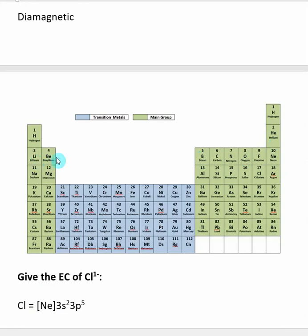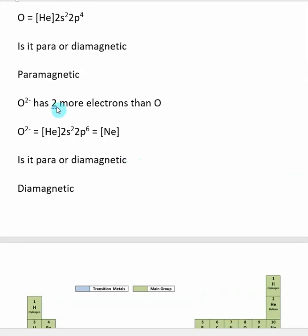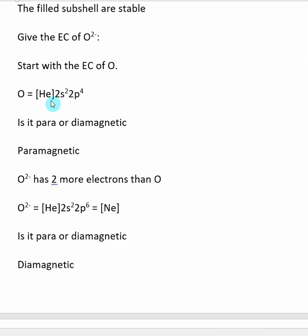We move forward. So here we have filled the 2S subshell, and we've moved on to the 2P subshell, and there are 1, 2, 3, 4 electrons in the 2P subshell. So the electron configuration of oxygen is a helium noble gas core, 2S² electrons, and 2P⁴ electrons.